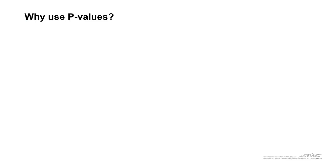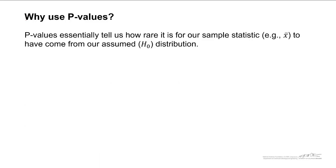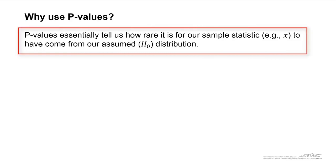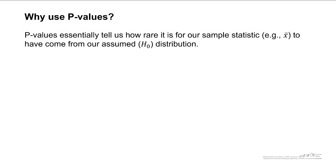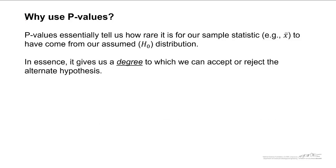Why use p-values? P-values have become quite common in the last couple decades. P-values essentially tell us how rare it is for our sample statistic, for example x-bar, to have come from our assumed distribution. If a p-value is very small, then it's very rare that a sample average, for example, came from our assumed distribution. If a p-value is very large, then it tells us that that would be quite common. In essence, it gives us a degree to which we can accept or reject the alternate hypothesis.